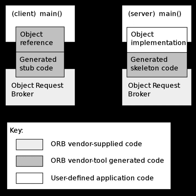On the server side, the POAs form a tree-like structure, where each POA is responsible for one or more objects being served. The branches of this tree can be independently activated, deactivated, have different code for the servant location or activation, and have different request handling policies.